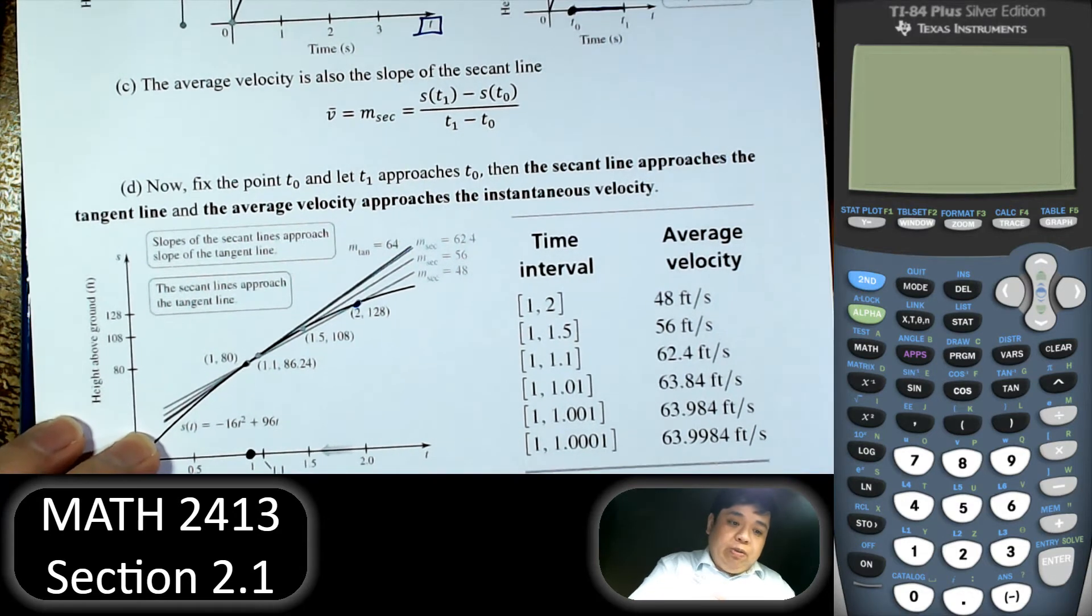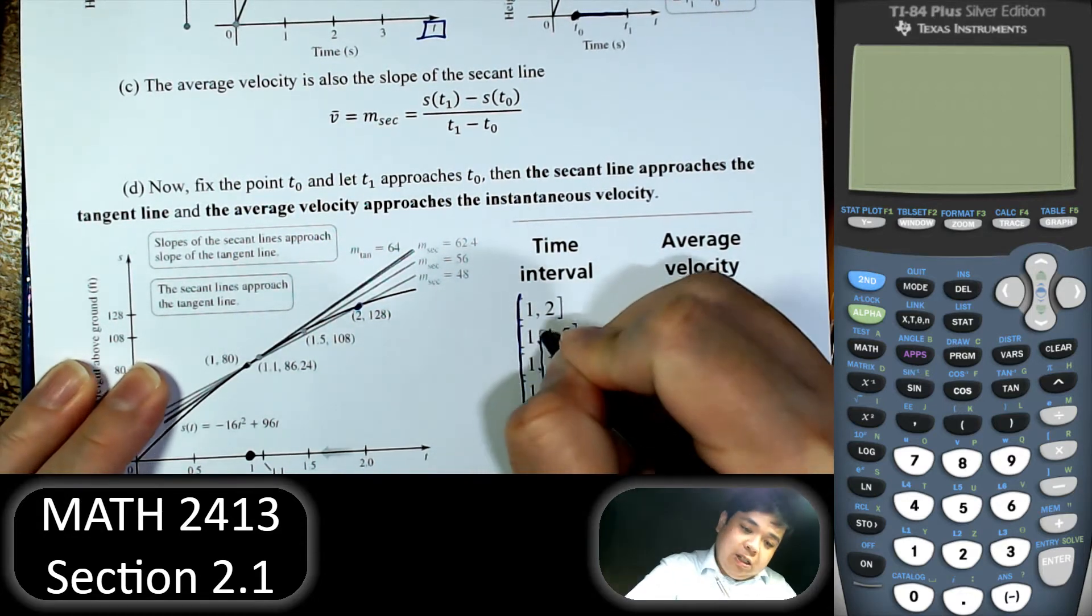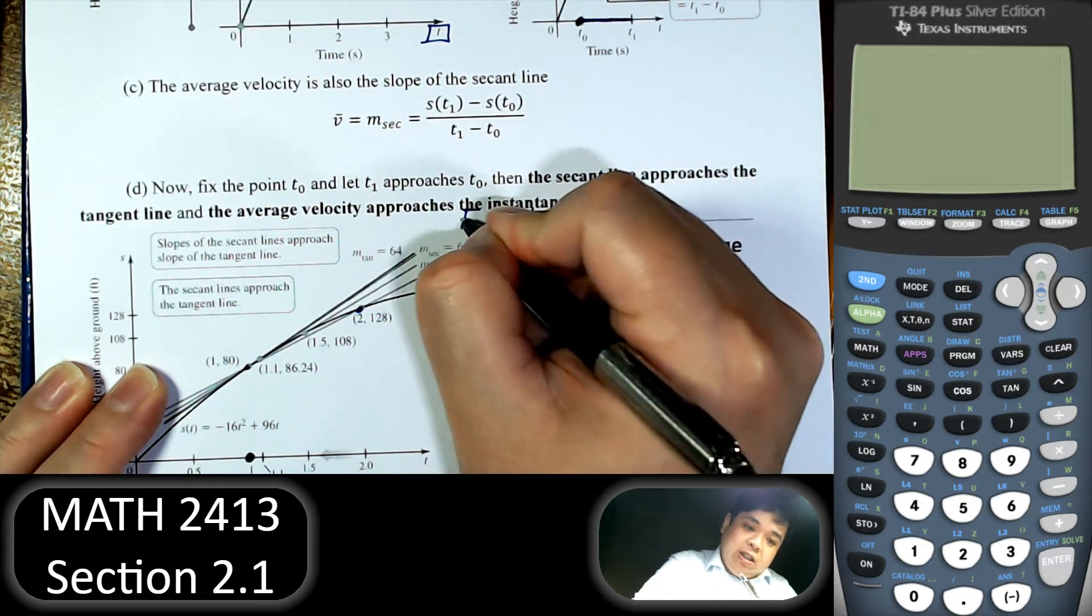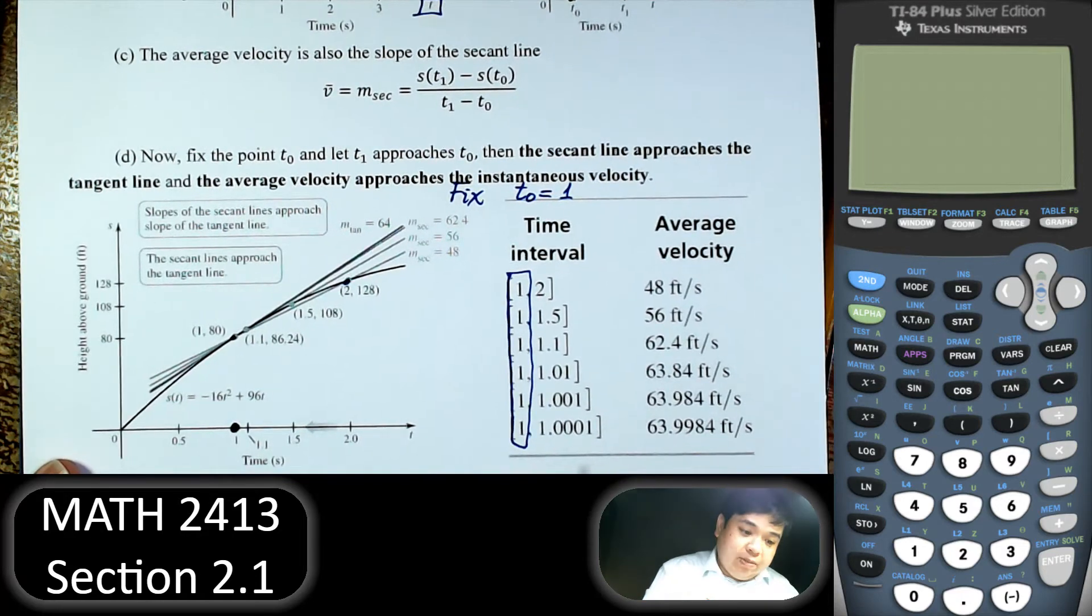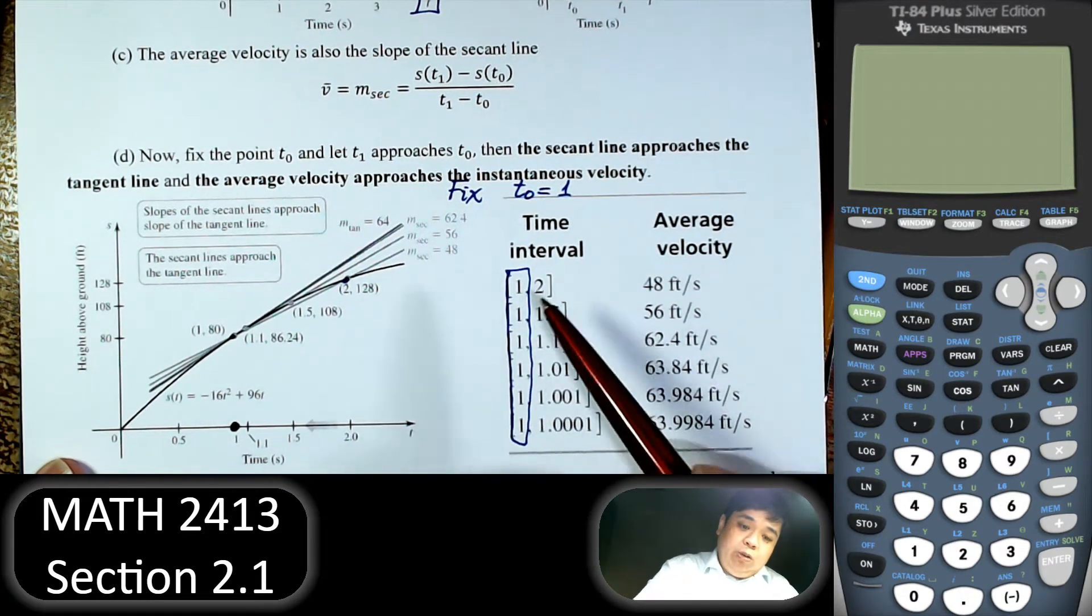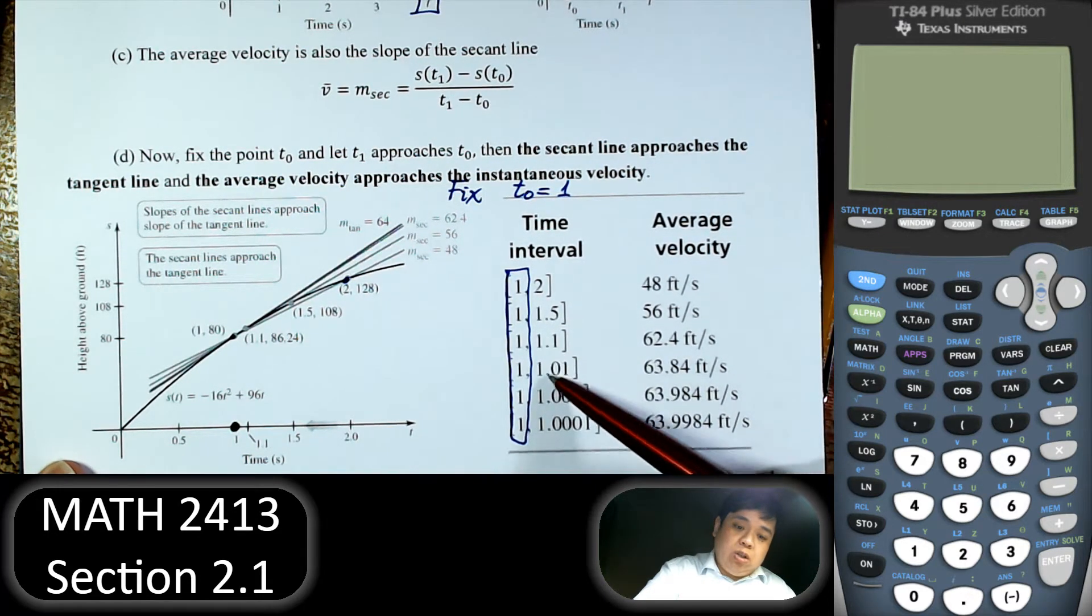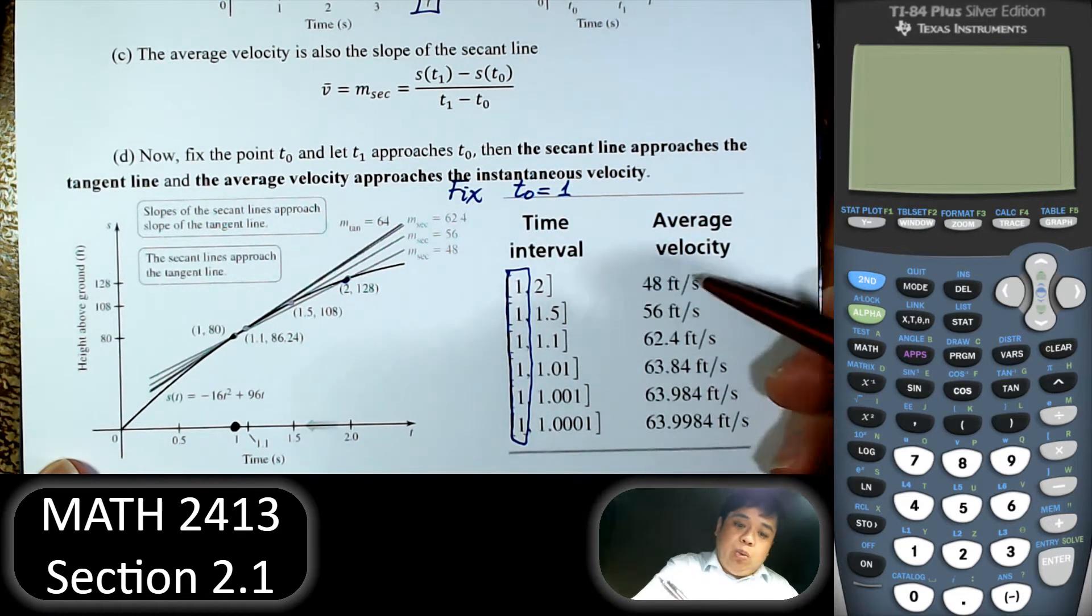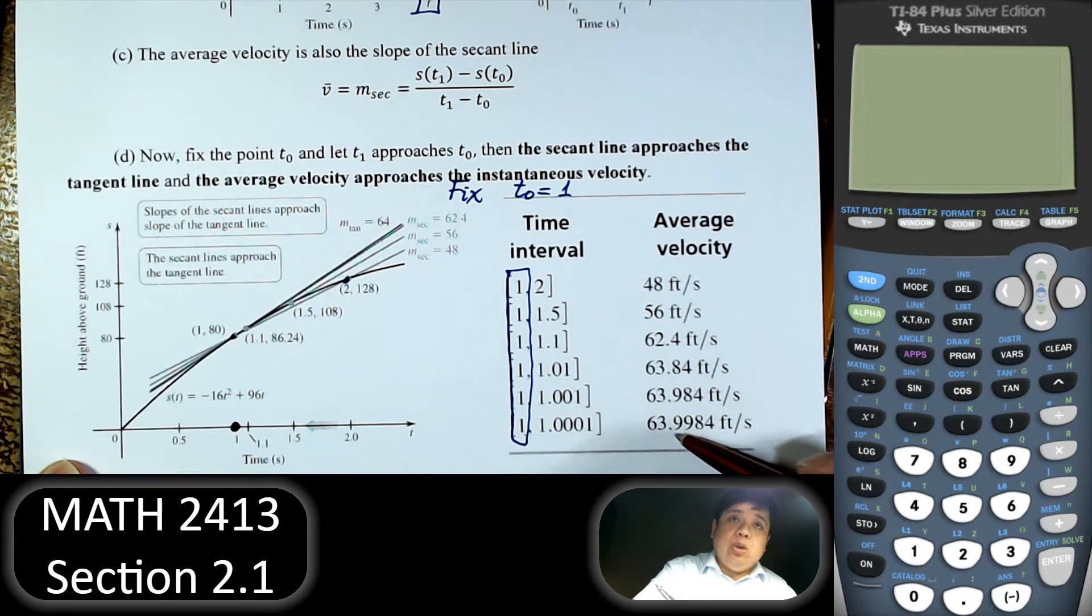So we fix t0. So t0 equals 1, that one is fixed. We're not going to change the values of t0. T1 we move to 1.5, 1.1. So we actually move t1 closer and closer to t0. So when we do that, we will find the slope changes and approaches this number.